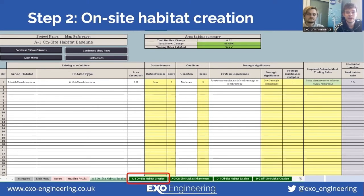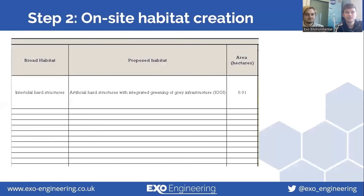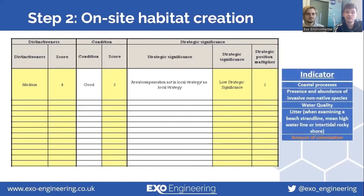We're now going to move on to on-site habitat creation. In the same way that we determined the on-site habitat baseline, we begin by inputting the broad habitat type. This time the broad habitat type is still intertidal hard structures, but the proposed habitat type is artificial structures with integrated greening of grey infrastructure — IGGI. This habitat type is assigned a higher distinctiveness score than artificial hard structures, being classed as medium distinctiveness. The higher biocolonisation potential of IGGI means that it should score more highly in the amounts of colonisation condition category.